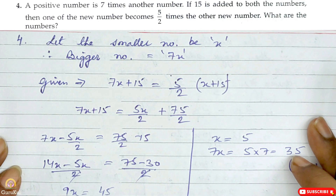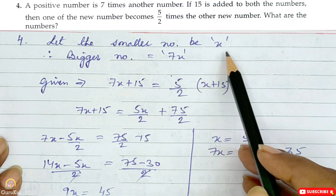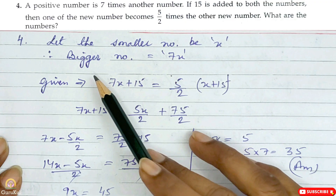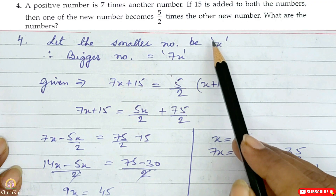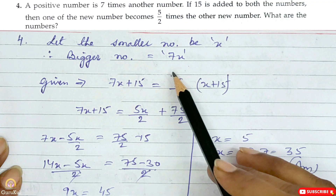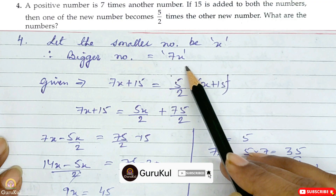Question number 4: A positive number is 7 times another number. If 5 is added to both the numbers, then one of the new numbers becomes 5/2 times the other new number. What are the numbers? Let the smaller number be x; therefore the bigger number is 7x.